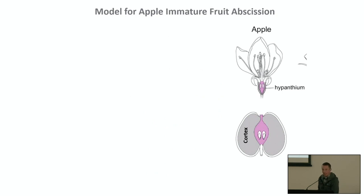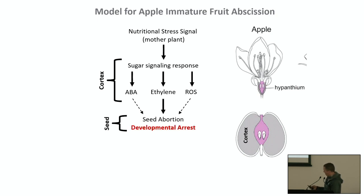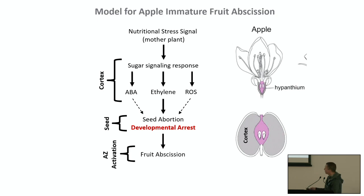In apple, work on immature fruit abscission indicates that the mother plant generates a nutritional stress signal causing a sugar signaling response in the cortex of the fruit, generating ABA, ethylene, and reactive oxygen species (ROS). It was proposed that ethylene acts as the key signal moving from the cortex to the seed to promote seed abortion, causing fruits to stop growing and developing, ultimately leading to fruit abscission.